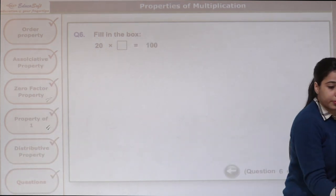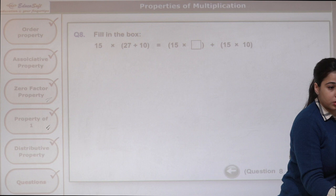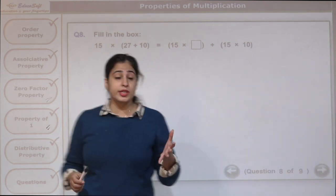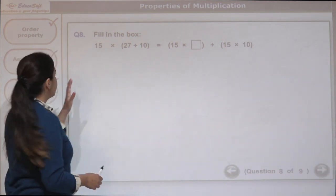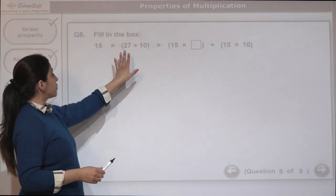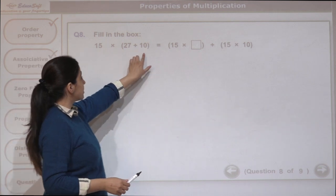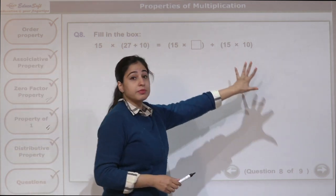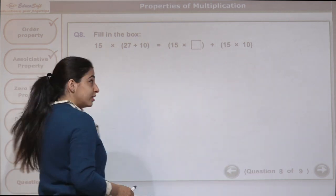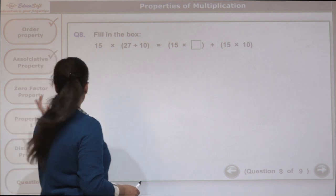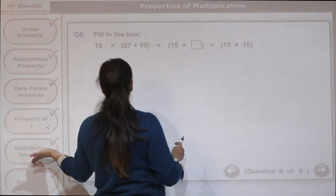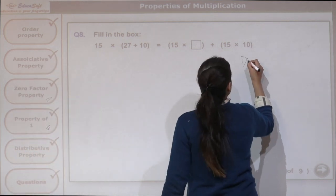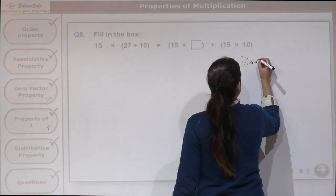Now we are going to move to properties. Which property are we using here? 15 times (27 plus 10) gives us 15 times 27 plus 15 times 10. This is our fifth property, the distributive property.